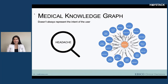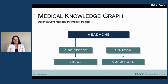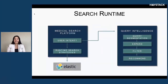Just because we semantically understand the query doesn't mean we really understand the user's intent. Headache is an example — it's a straightforward mapping in our knowledge graph with quite a bit of rich synonyms. But headache is a common side effect of many drugs and a symptom of many medical conditions. So we don't want to blindly pass this semantic understanding along to search — we want to be more intelligent about it.